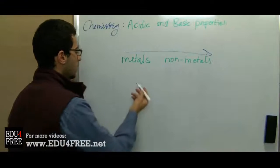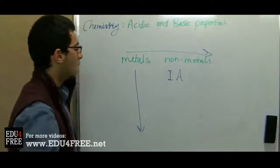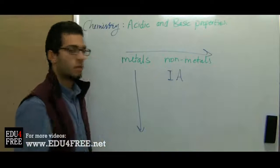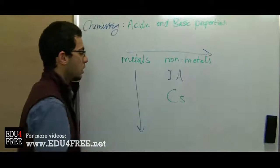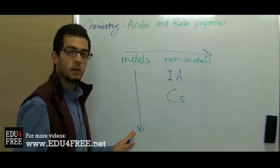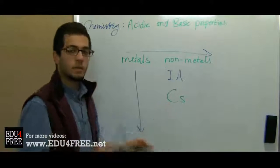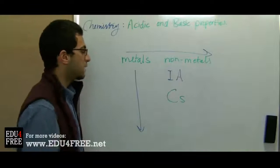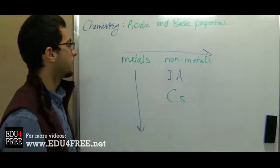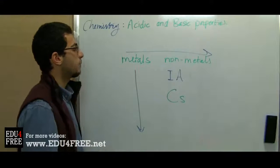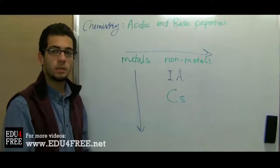In groups, as we go from top to bottom — for example, let's take group 1A — we know that the element with the most metallic property is cesium. Cesium is found at the bottom of group 1A, so cesium has the most metallic property and, accordingly, it will form the strongest basic oxides. This is how the acidic and basic properties vary according to the distribution of metals and nonmetals in the periodic table.